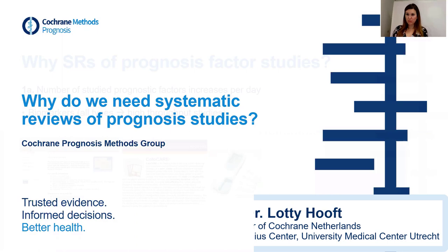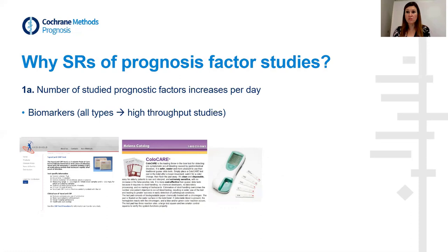Welcome to this session about why we need systematic reviews of prognosis studies. The reasons are more or less in line with the reasons why we need systematic reviews for therapeutic interventions or diagnostic test accuracy studies. It's very helpful when there is an information overload — there are a lot of publications available and you want an overview of them. You want to know what is already known and what has already been researched.